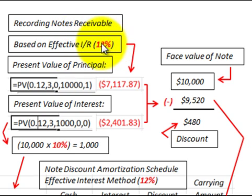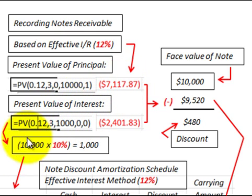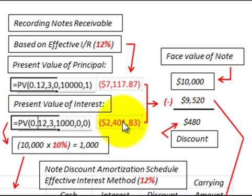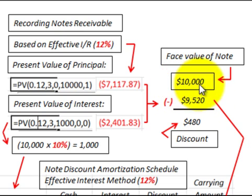Based on the effective interest rate of 12%, the present value of the principal: discounting $10,000 back at three years at 12% gives us $7,117. The note has 10% interest on $10,000, so we get a $1,000 annual interest payment. Discounting that $1,000 payment for three years at 12% gives a present value of $2,401. Adding $7,117 plus $2,401 gives a total present value of $9,520. The face value is $10,000, so the note was sold at a discount of $480.